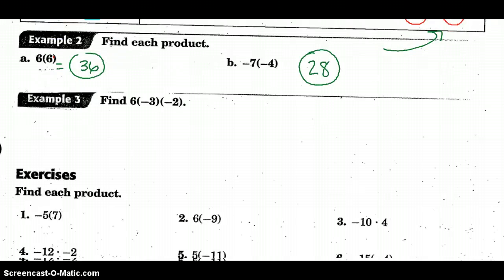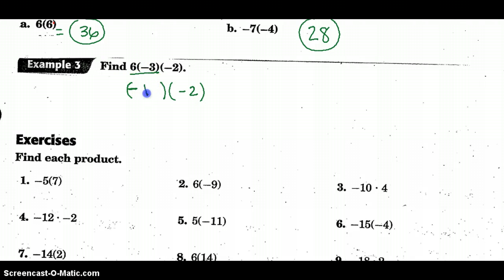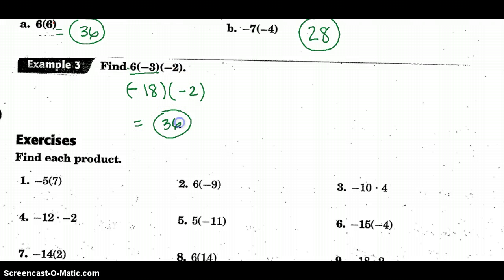What happens when there are three numbers? We obey the order of operations. First I'll take care of 6 times negative 3 — those are opposite signs, so it's going to be negative. Negative 2 waits its turn. 6 times 3 is 18, and it's negative because of the positive and negative. Now I multiply negative 18 times negative 2 — two negatives make a positive — and 18 times 2 is 36. We just work from left to right.